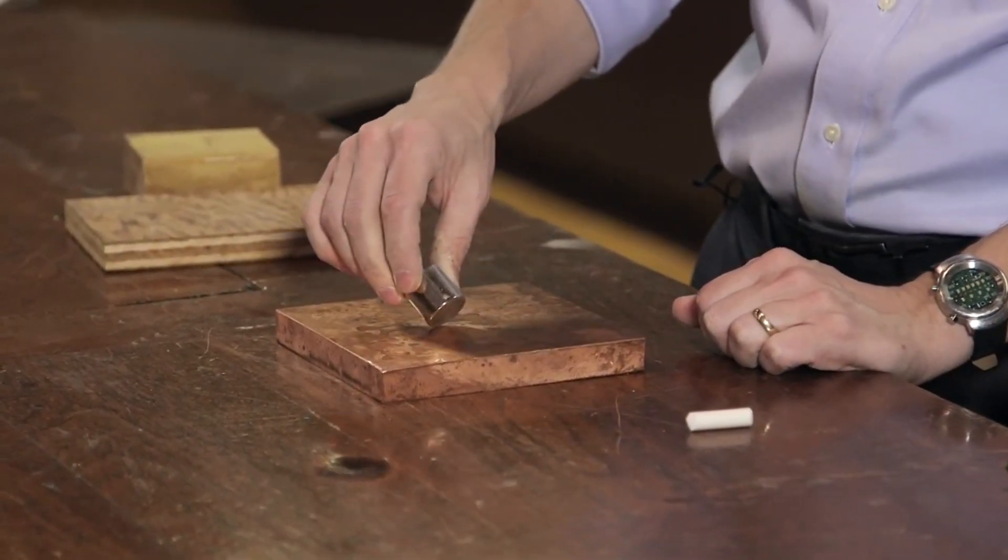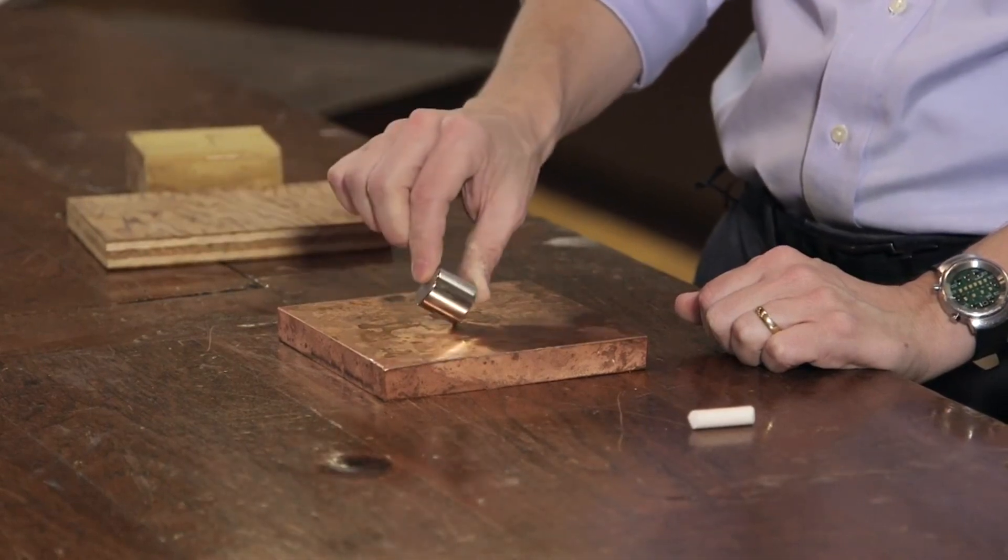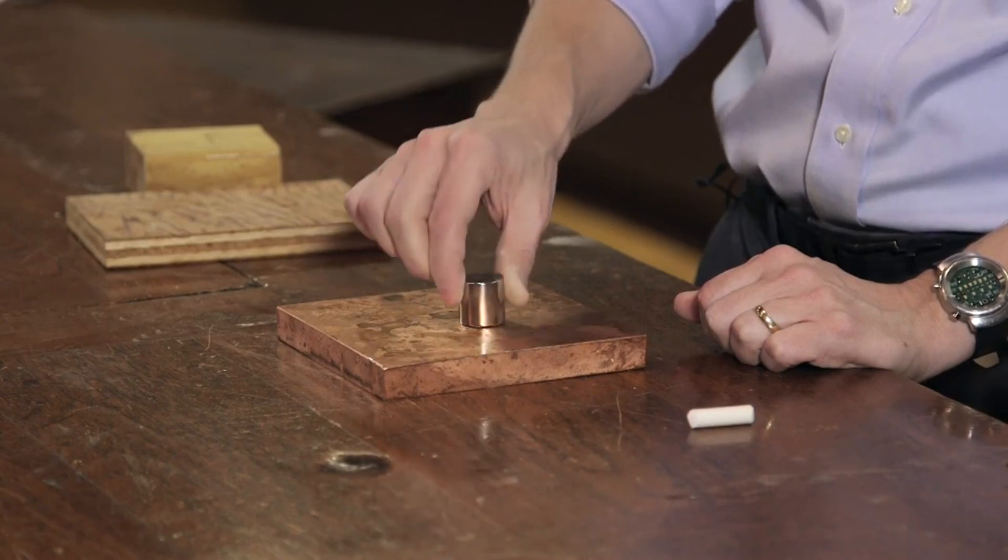You can kind of see it if you hold it on the corner and let it fall. It looks like it falls quite a bit slower than it should. That's the eddy currents always opposing and damping the motion.